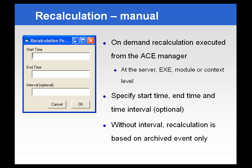It's very easy to do a recalculation. You just go into the ACE manager, and at any of the levels — depending on how much recalculation you want to do: server, executable, module, or context level — you simply right-click and select recalculate, or use the menus. You're then presented with the recalculation menu where you specify the starting and ending times of the recalculation period.